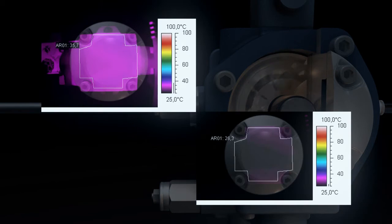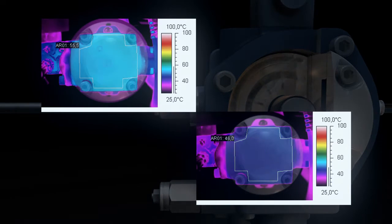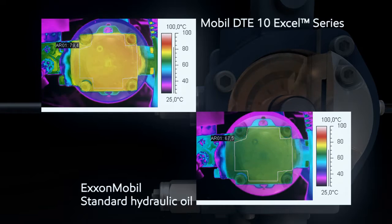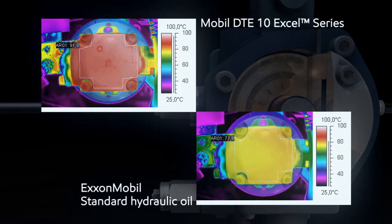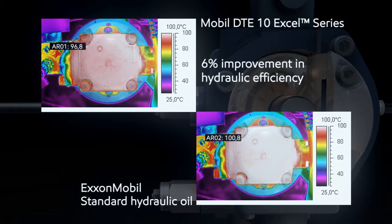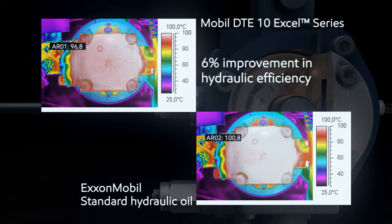Mobil DTE 10 Excel, on the left-hand side, runs cooler and ends the test with an operating temperature 6 to 7 degrees centigrade lower than ExxonMobil's standard hydraulic oil. When measured, this equates to a 6% improvement in hydraulic efficiency.